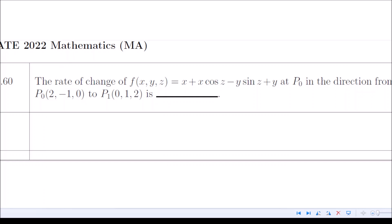At the point P₀, what is P₀? It's (2, -1, 0) in the direction from P₀ to P₁. Now obviously here, since we have more than one variable, rate of change means we have to find the directional derivative.